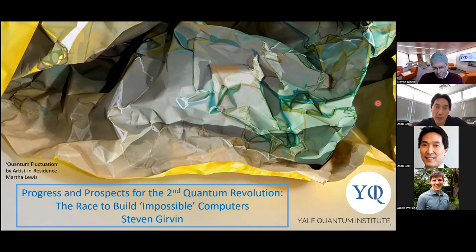Dr. Girvin is a foreign member of the Royal Swedish Academy of Sciences and a member of the U.S. National Academy of Sciences. In 2007, he shared the Oliver E. Buckley Prize of the American Physical Society for work on the fractional quantum Hall effect. In 2019, he and co-author Kun Yang published the textbook Modern Condensed Matter Physics with Cambridge University Press.